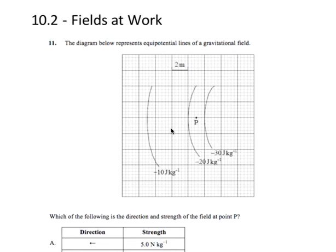David Kahn here with another question from the Question Bank in Topic 10.2. What we're looking at is a partial field diagram for a gravitational field. There's a scale, so every large box is 2 meters, and we see some equipotential lines in the diagram — not field lines, but equipotential lines.